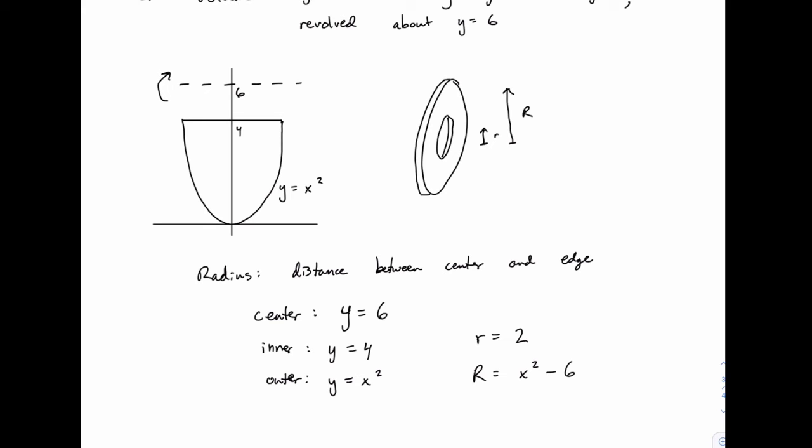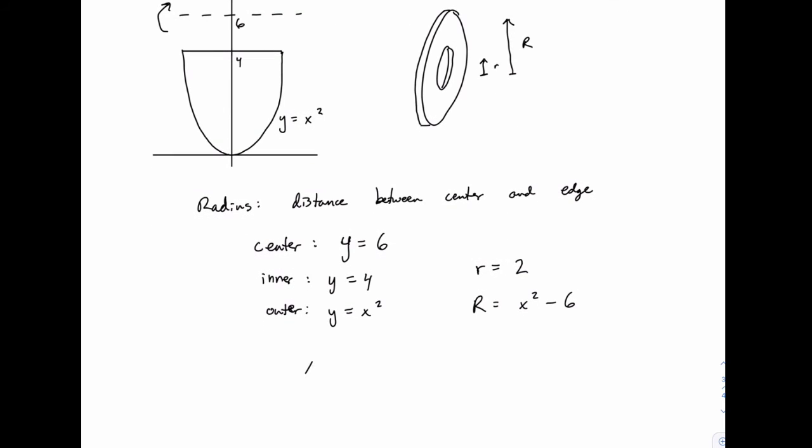Once we have the values for the radius, that means that the area function is going to be pi times the outer radius squared minus pi times the inner radius squared.